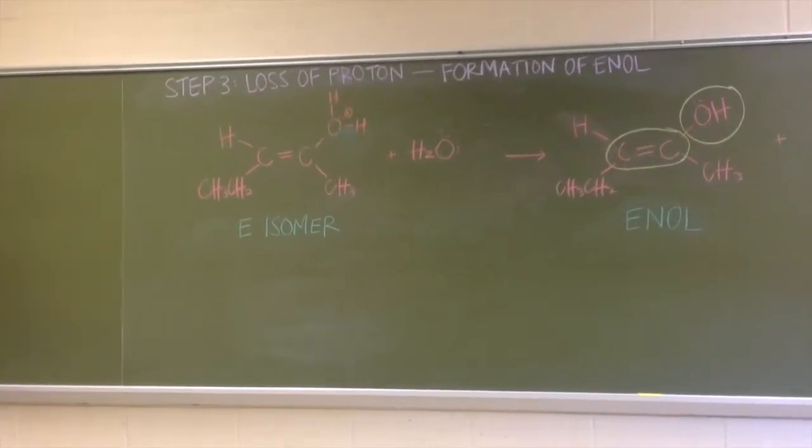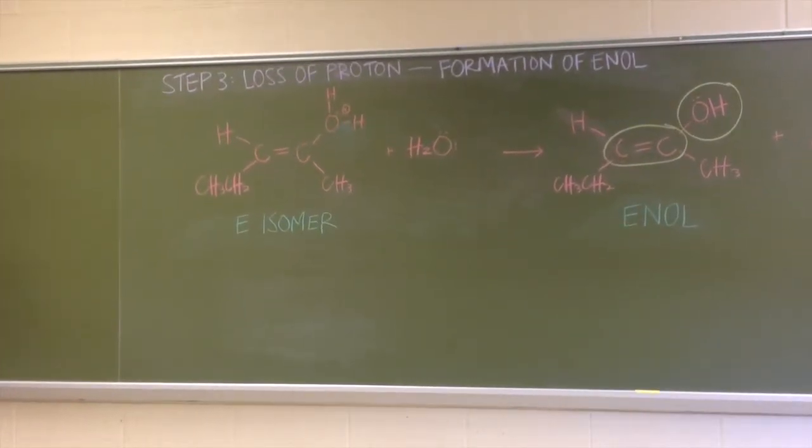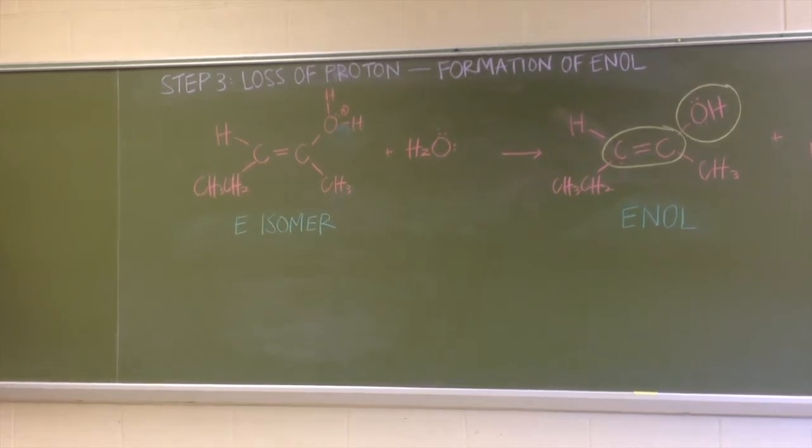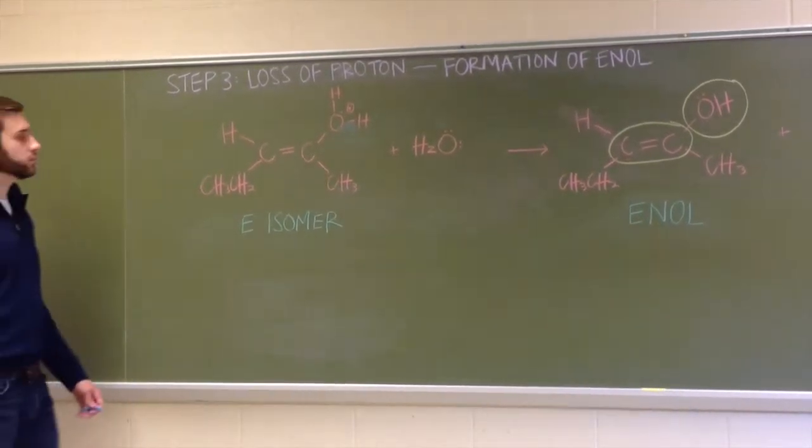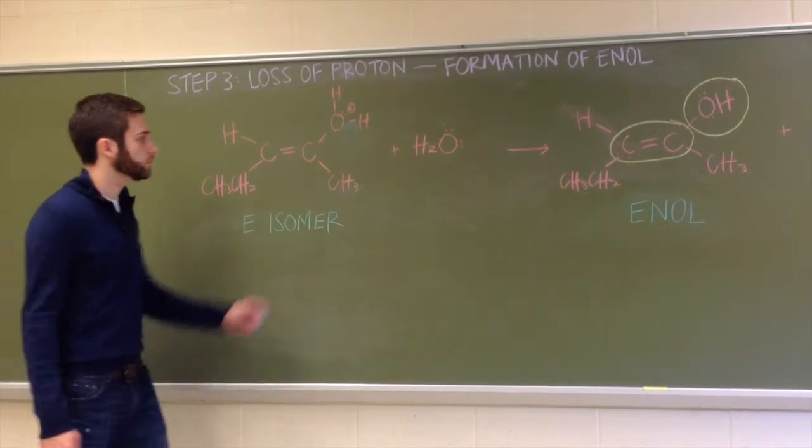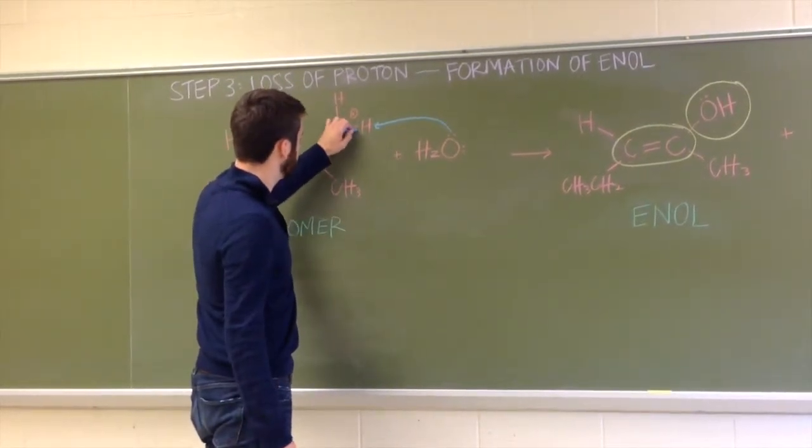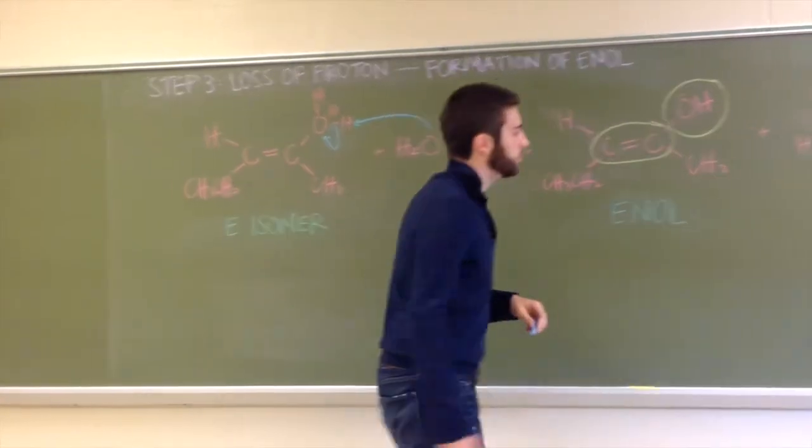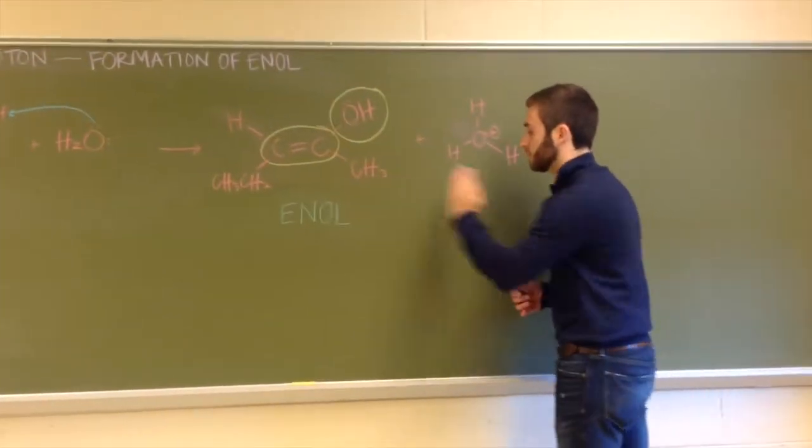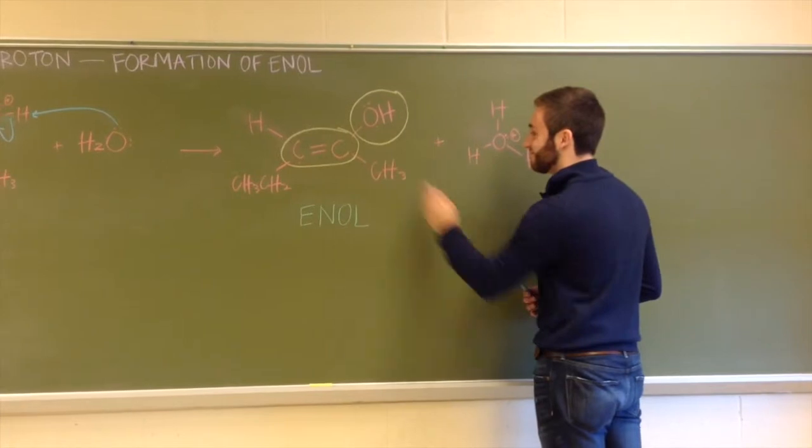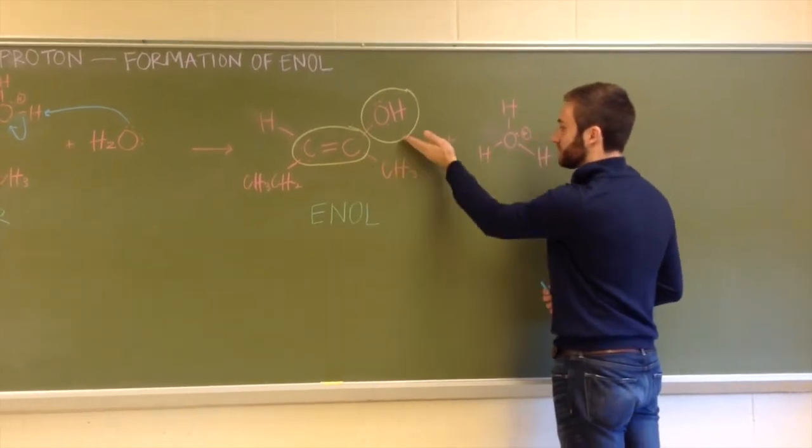Step 3 consists of the loss of a proton to form an enol. An OH bond on the E isomer is broken when a lone pair from H2O attacks the hydrogen. This leads to the formation of an enol, which has two functional groups: a carbon-carbon double bond and an OH group.